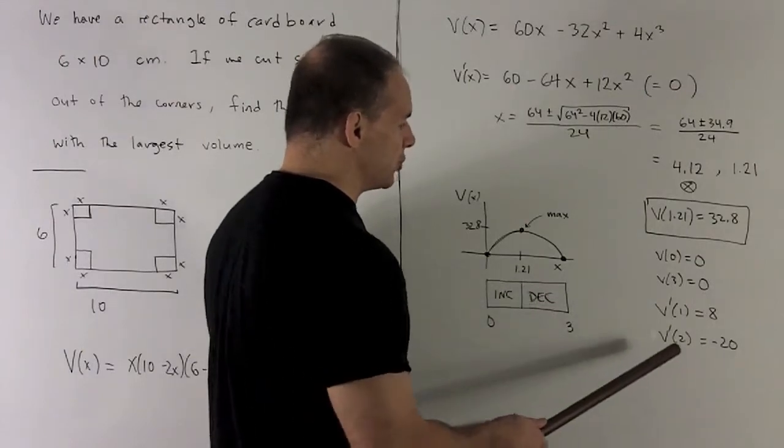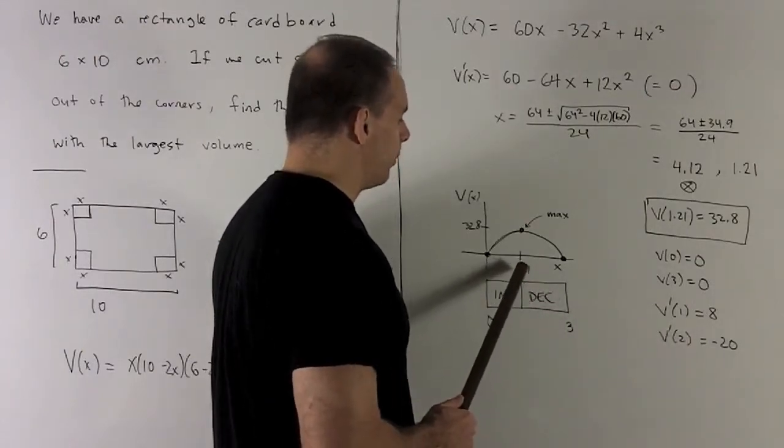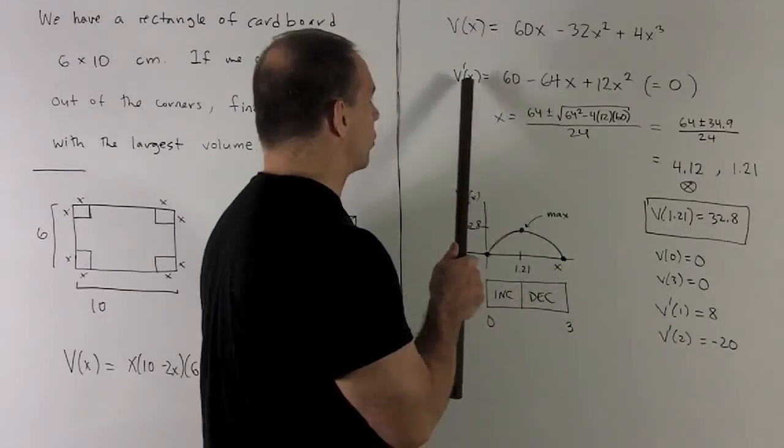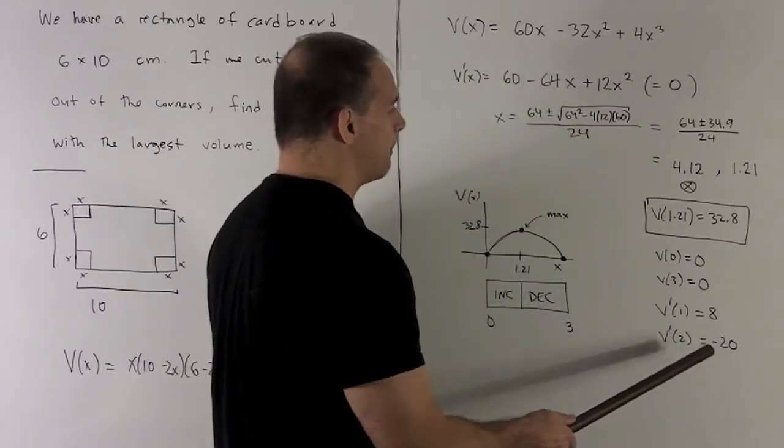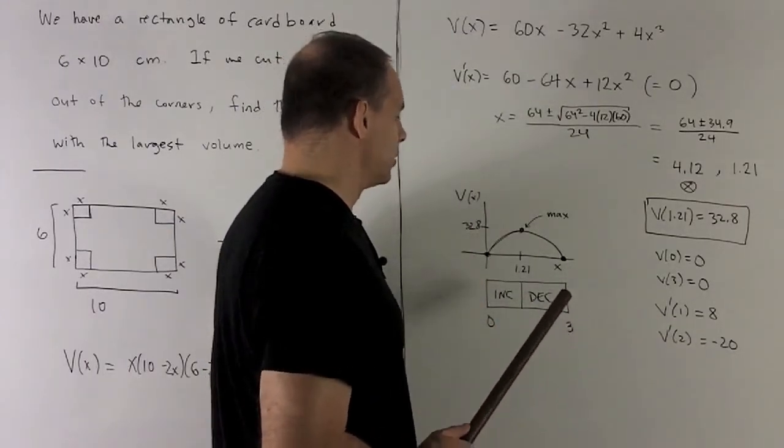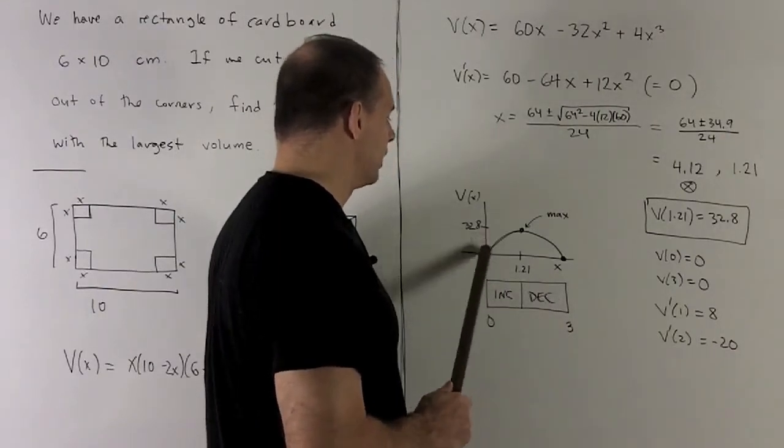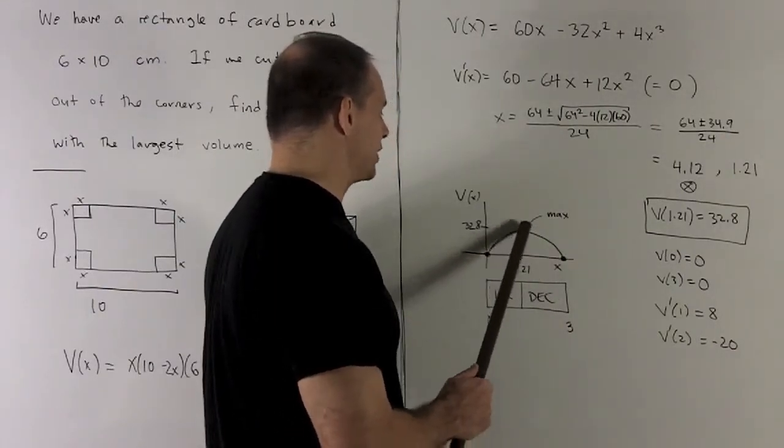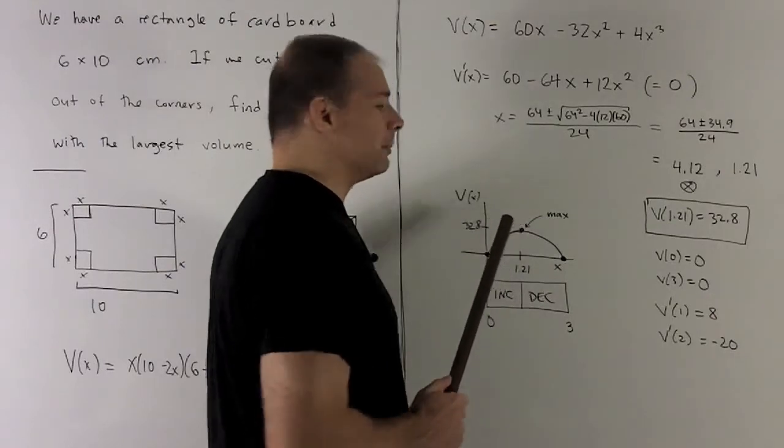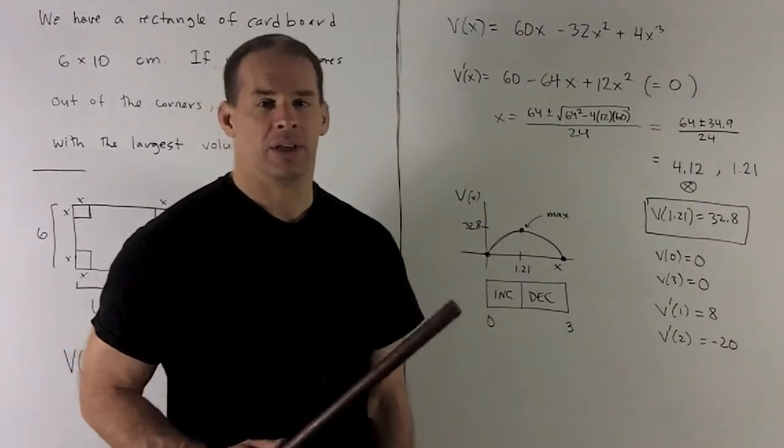For the other side, I'm going to choose two. That's between 1.21 and three. So we put that into the derivative and what comes out is minus 20. So that's going to be decreasing on this side. I connect the dots, increasing up, decreasing down. That tells me that my point is definitely a maximum. And so we're out of the woods.